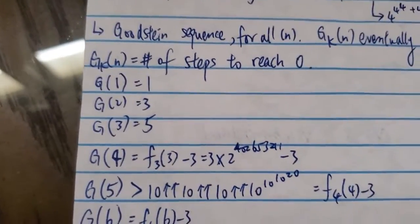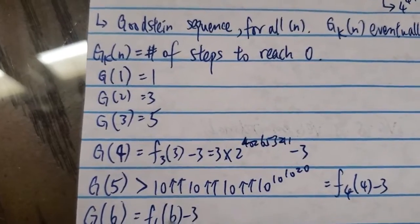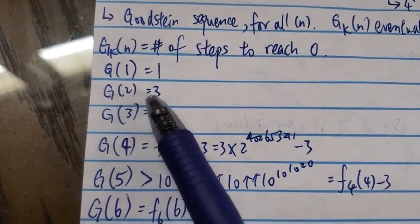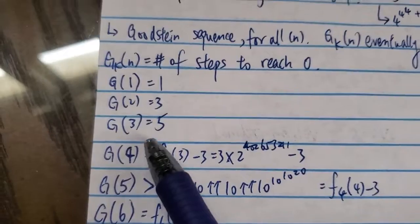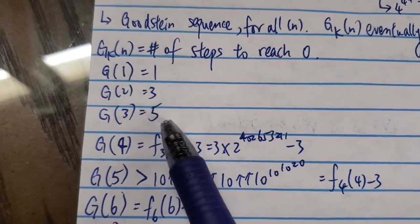And then at first, it doesn't grow very quickly. And then for number 2, it takes 3 steps to reach zero. And then for 3, it takes 5 steps. So still not too crazy.